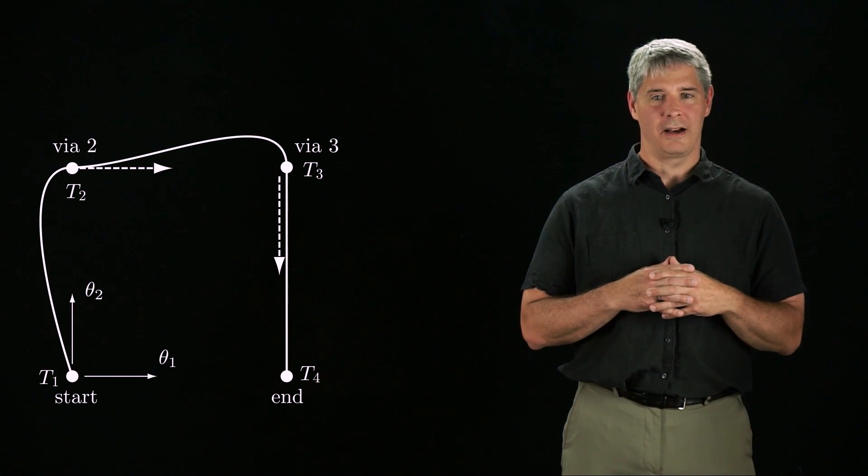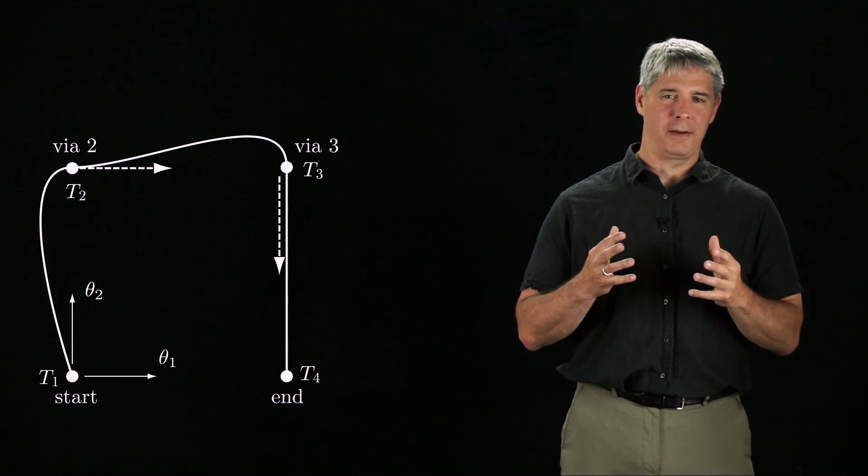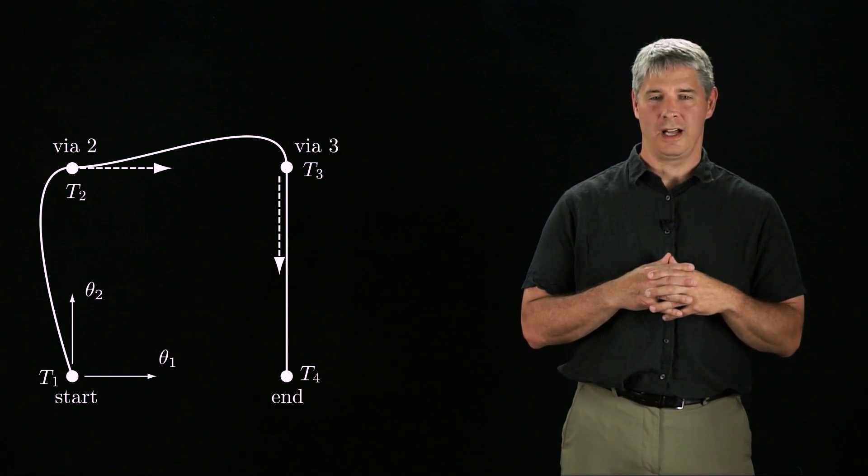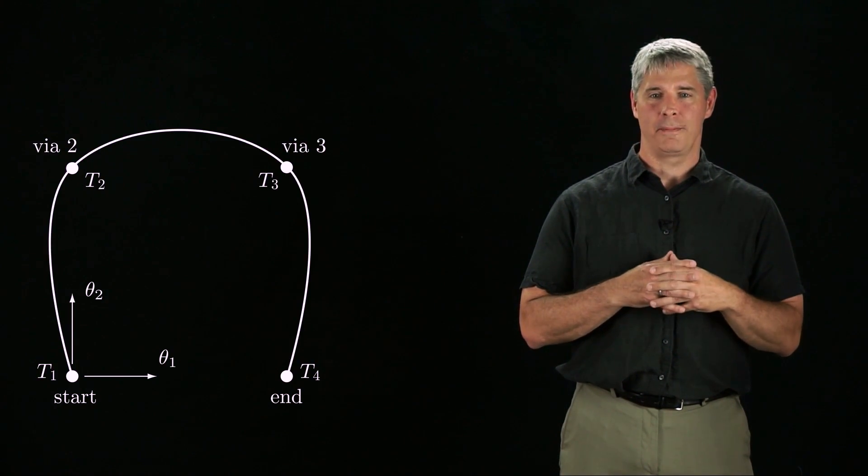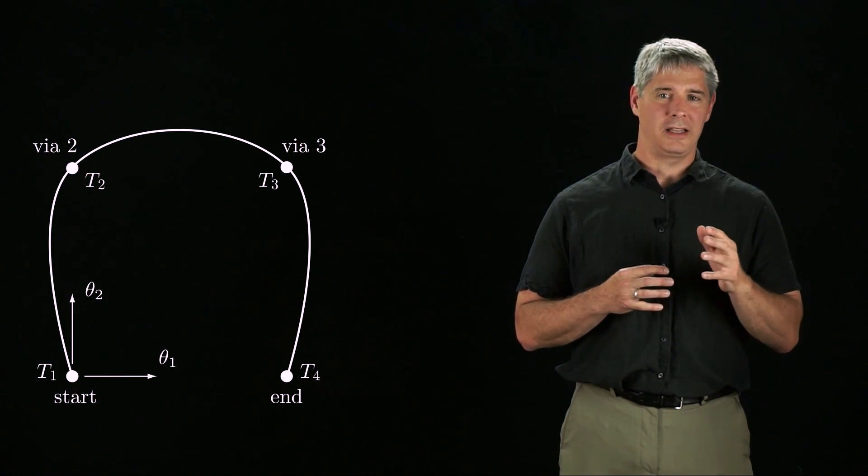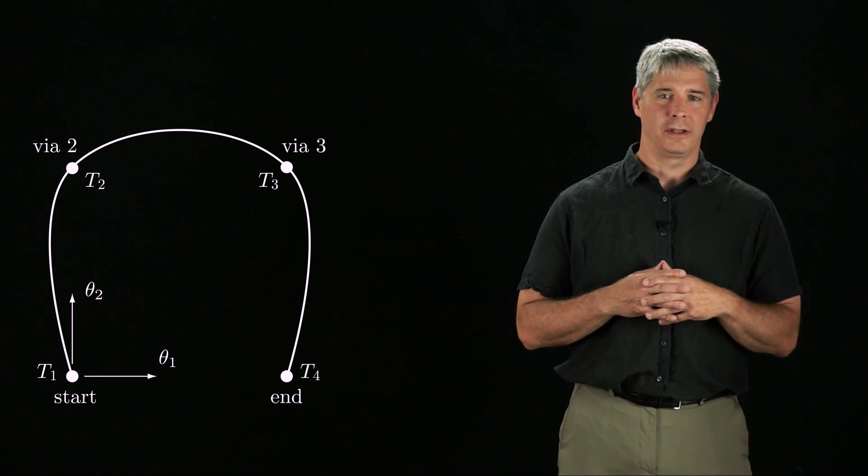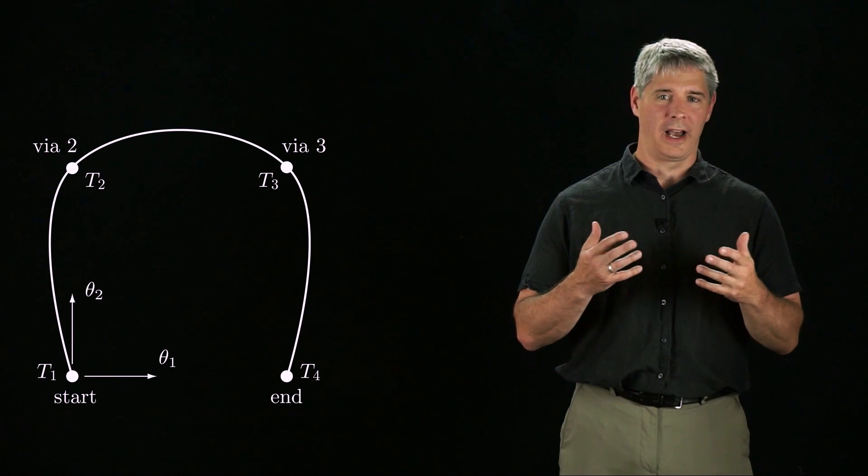Discontinuity in the acceleration may not be desirable. Also, it may be cumbersome to have to specify the velocity at each via point. Therefore, another solution is to leave the velocities at the via points free, but to constrain the velocity before and after a via point and the acceleration before and after a via point to be equal.